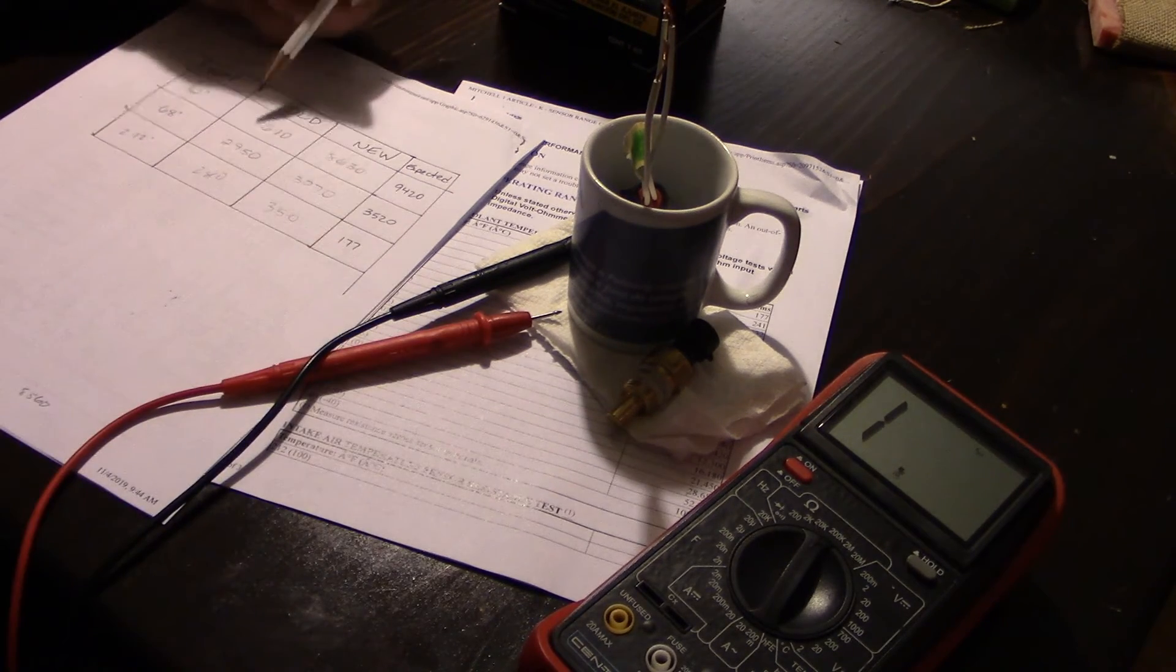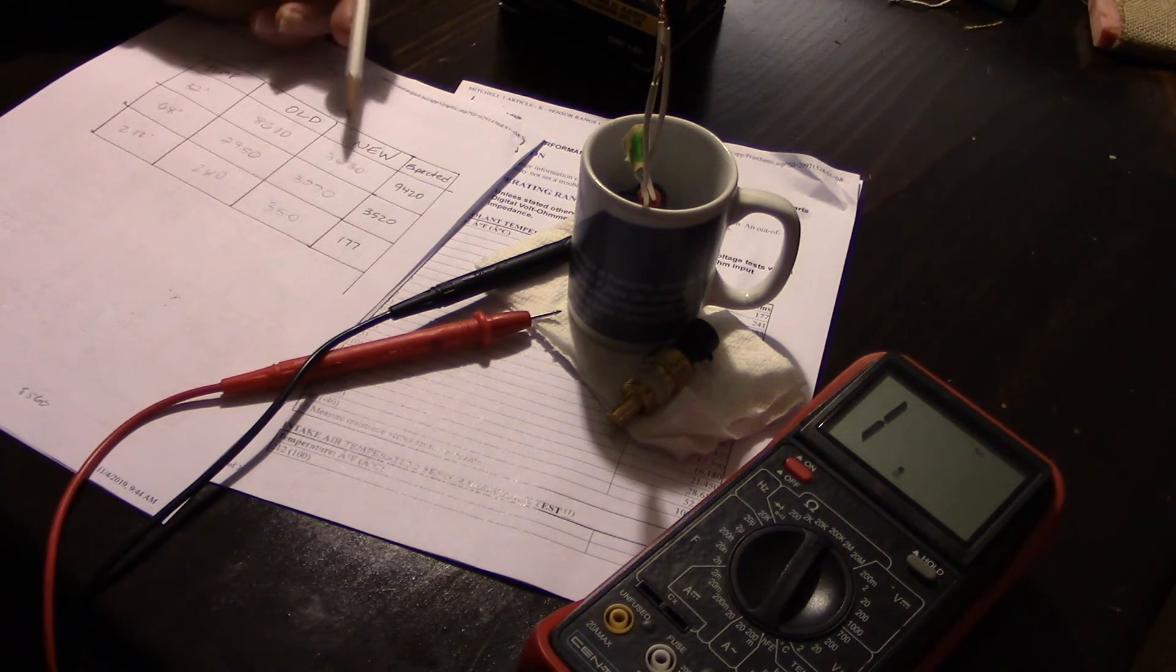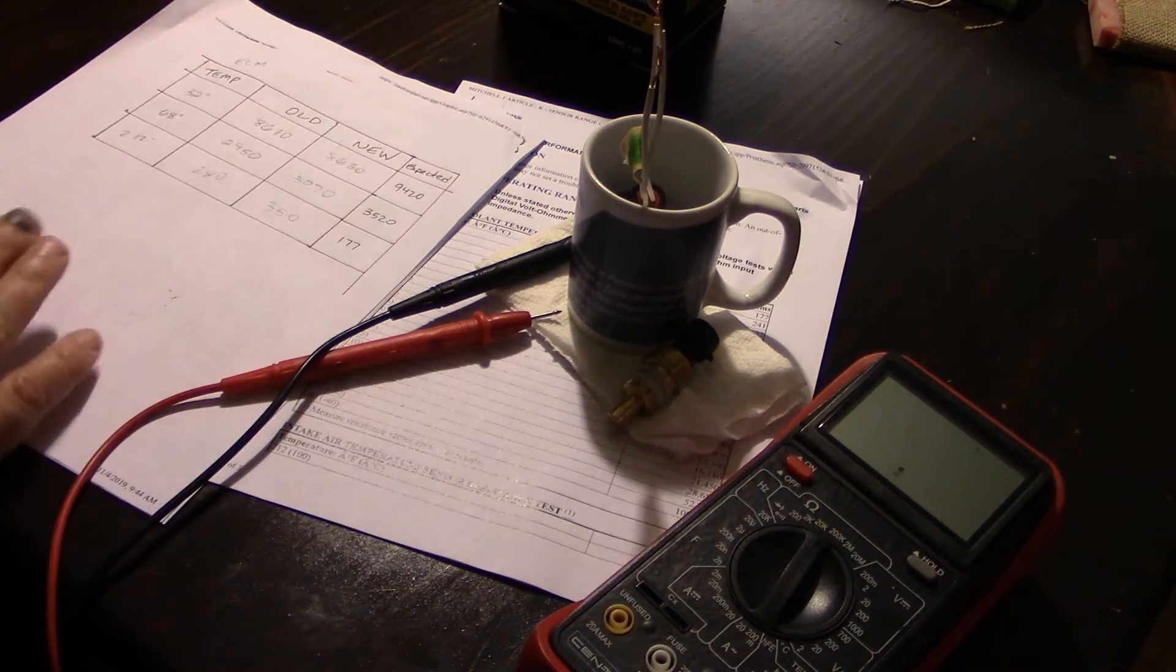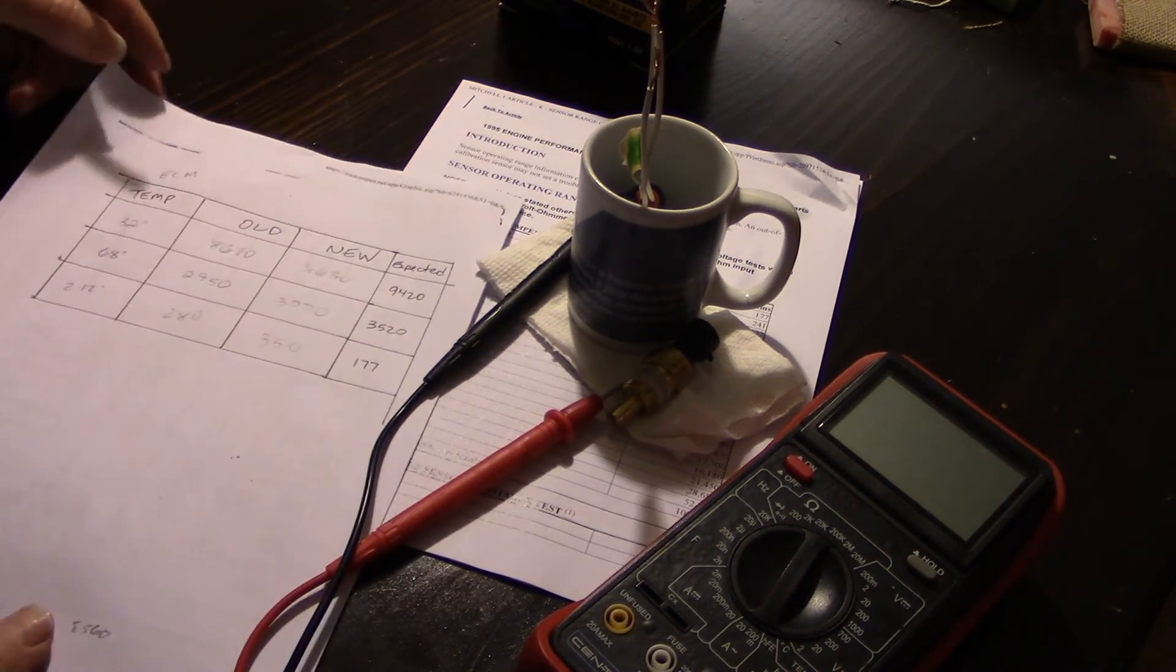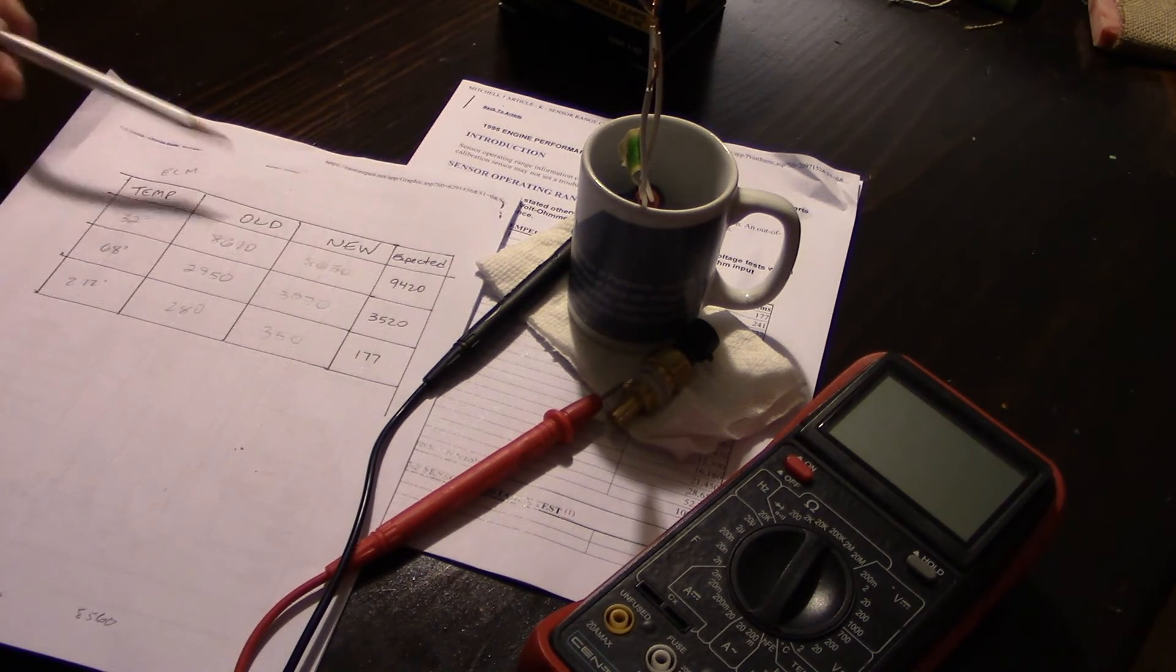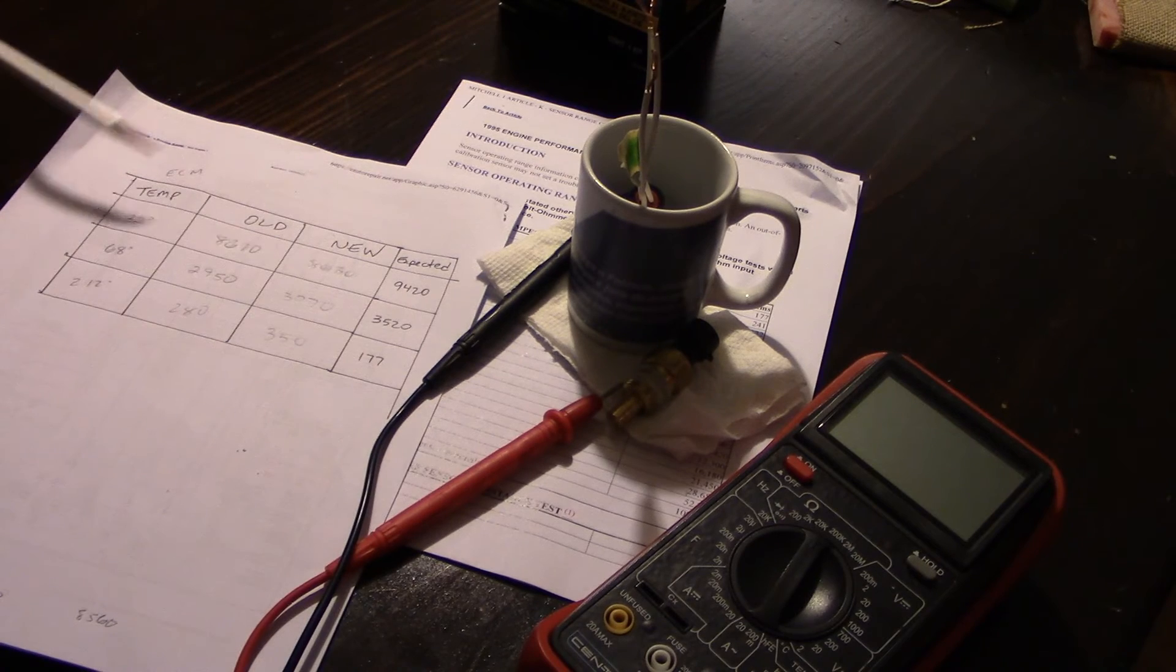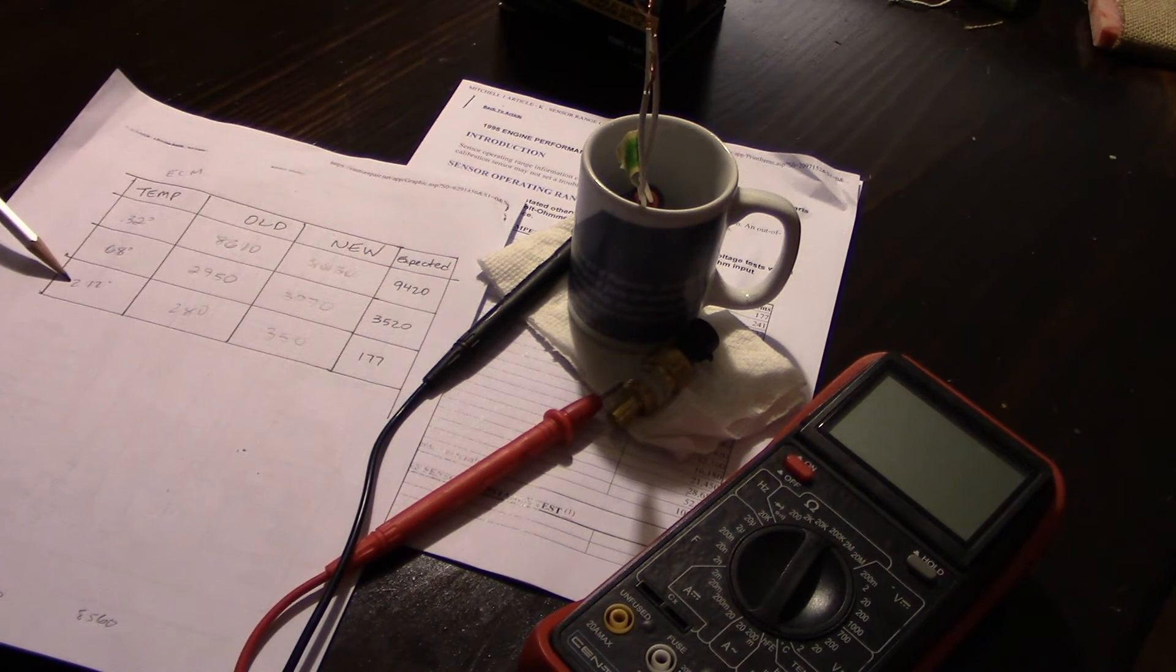And by comparing these two side by side, the old read 8610, the new 8630, so not much difference at all. So if you zoom in here on the results, we checked both the old and the new coolant temperature sensors at 32 degrees, 68 degrees room temperature, and 212 degrees boiling.